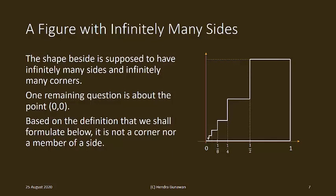The two-dimensional shape beside is supposed to have infinitely many sides and infinitely many corners. One remaining question is about the origin, the point (0,0). Based on the definition that we shall formulate, it is not a corner nor a member of a side.